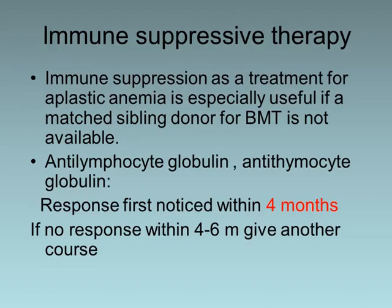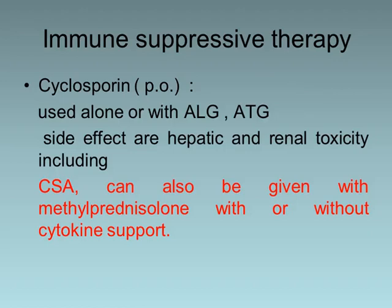Immunosuppressive therapy is very important, especially useful if a matched donor is not available. Either antilymphocyte globulin or antithymocyte globulin is used; the first response is usually noticed within four months. If no response occurs within four to six months, another course should be given. Cyclosporine has the advantage of oral administration and can be given alone or with antilymphocyte or antithymocyte globulin, as well as with methylprednisolone, with or without cytokine support. However, it has the side effects of hepatic and renal toxicity, which should be checked before starting treatment and every three to six months.